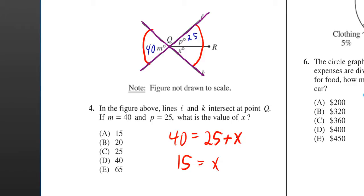So once you write 40 is equal to 25 plus X, you can subtract 25 from both sides and you just get 15.